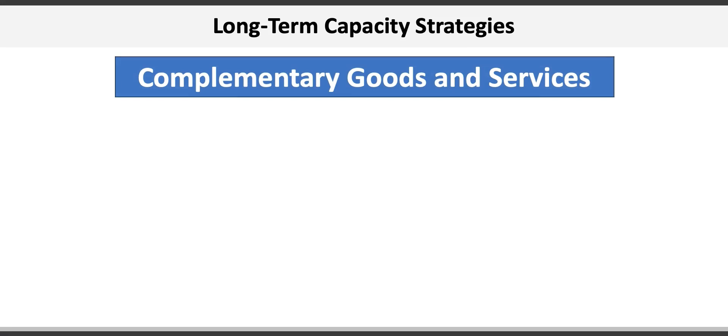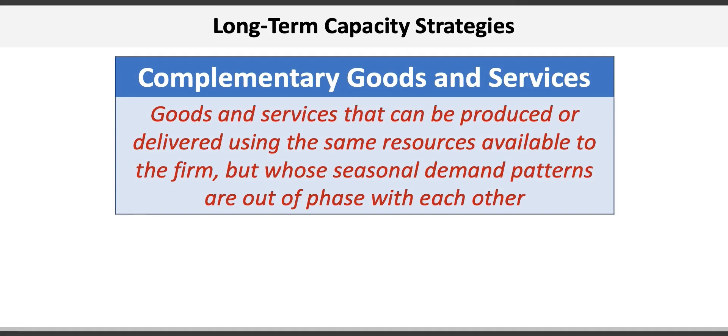One of the common long term strategies companies use is complementary goods and services, which are those that can be produced or delivered using the same resources available to a firm, but whose seasonal demand patterns are out of phase with each other. For example, Honda might leverage economies of scale developed in small engines to manufacture lawnmowers for sale in spring and summer, and then snowblowers for sale in late fall and winter.